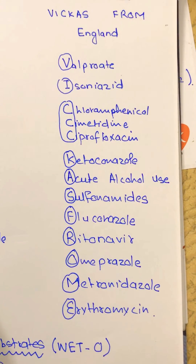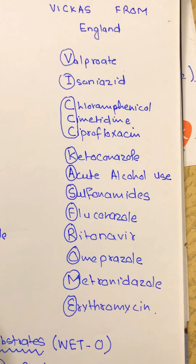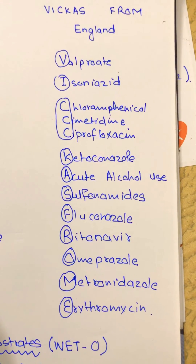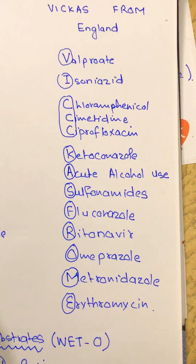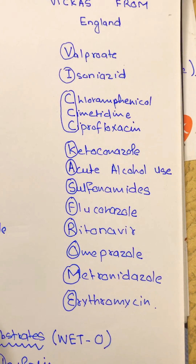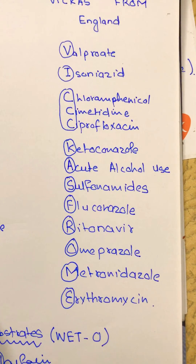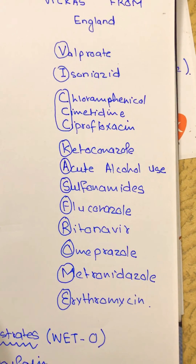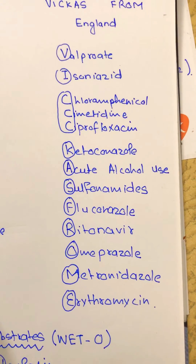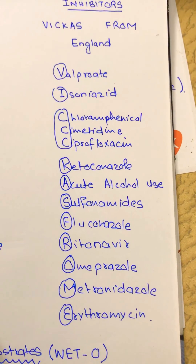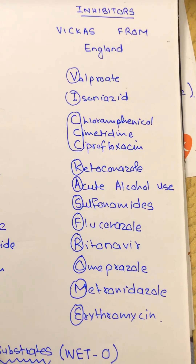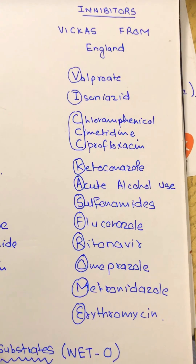Now come the inhibitors. VICAS from England: valproate, isoniazid, chloramphenicol, cimetidine, ciprofloxacin, ketoconazole. Acute alcohol use, sulfonamides, fluconazole, ritonavir, omeprazole, metronidazole, erythromycin — from England. You can actually use the 'M' in form to remember erythromycin as it is a macrolide.